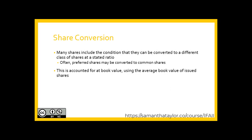In a share conversion, many shares include the condition that they may be converted to a different class at a stated ratio—often preferred shares converting to common shares. We take the book value of the preferred shares, reverse those out, and allocate that same amount to common shares: debit preferred shares, credit common shares for the same amount. The economic reality reflects back to when those preferred shares were originally issued; the conversion merely reflects the types of shares now outstanding.